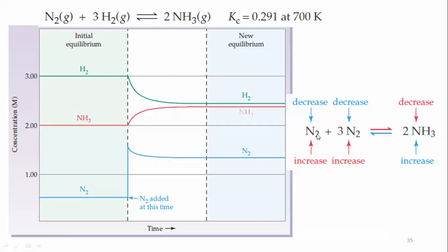With the passage of time, the concentration of nitrogen decreases, the concentration of hydrogen decreases, and the concentration of ammonia increases.